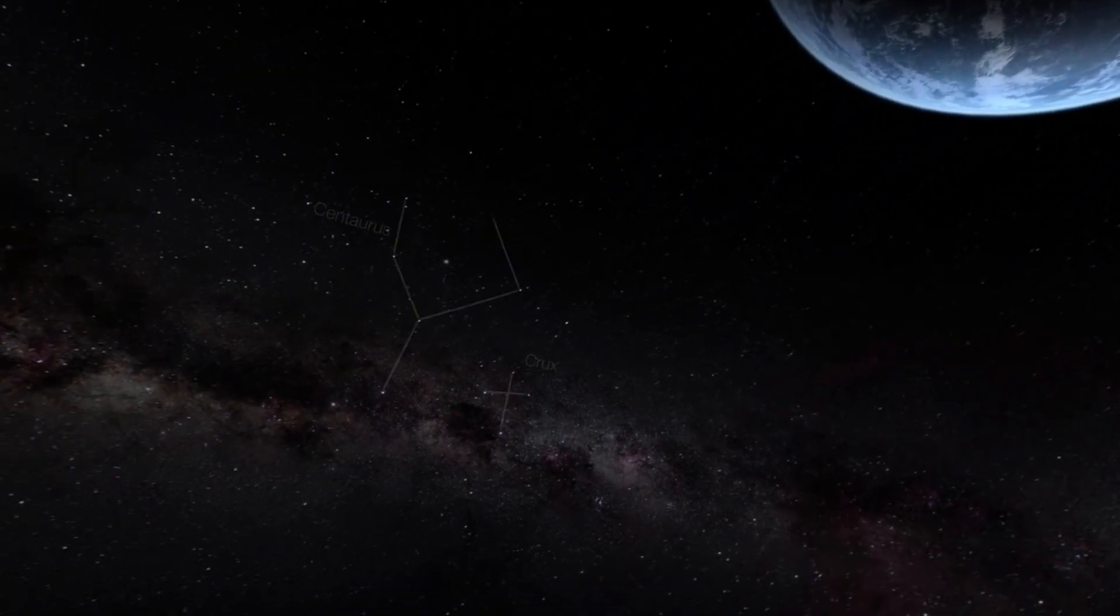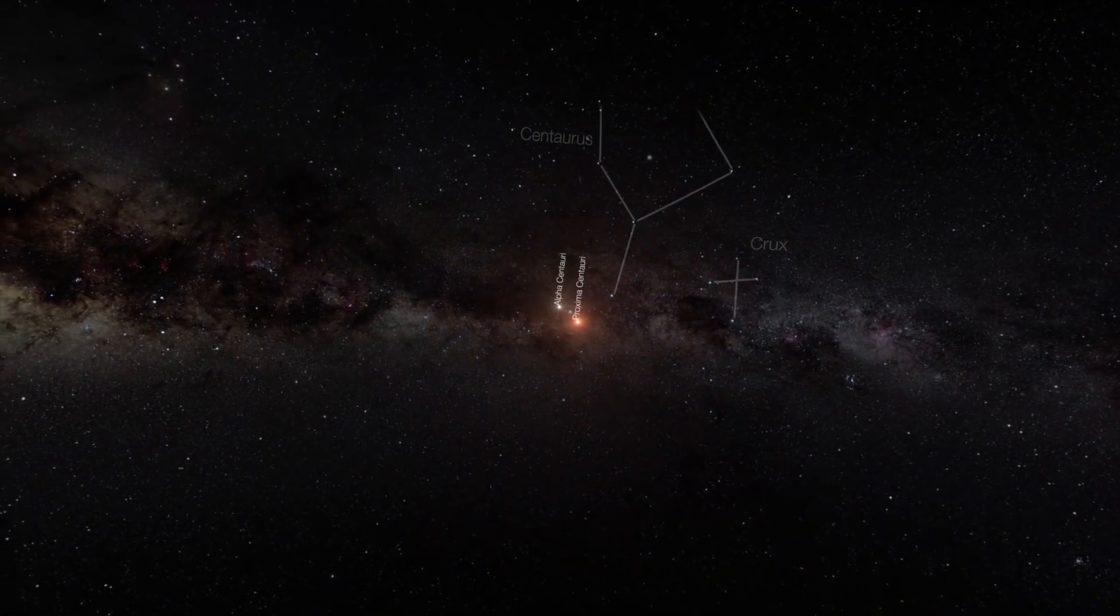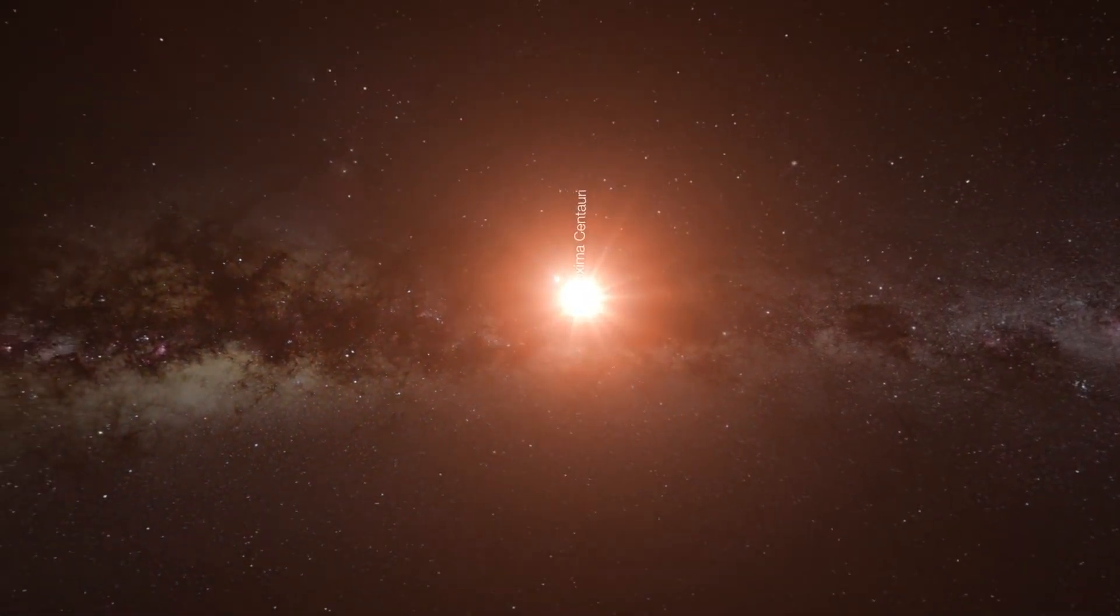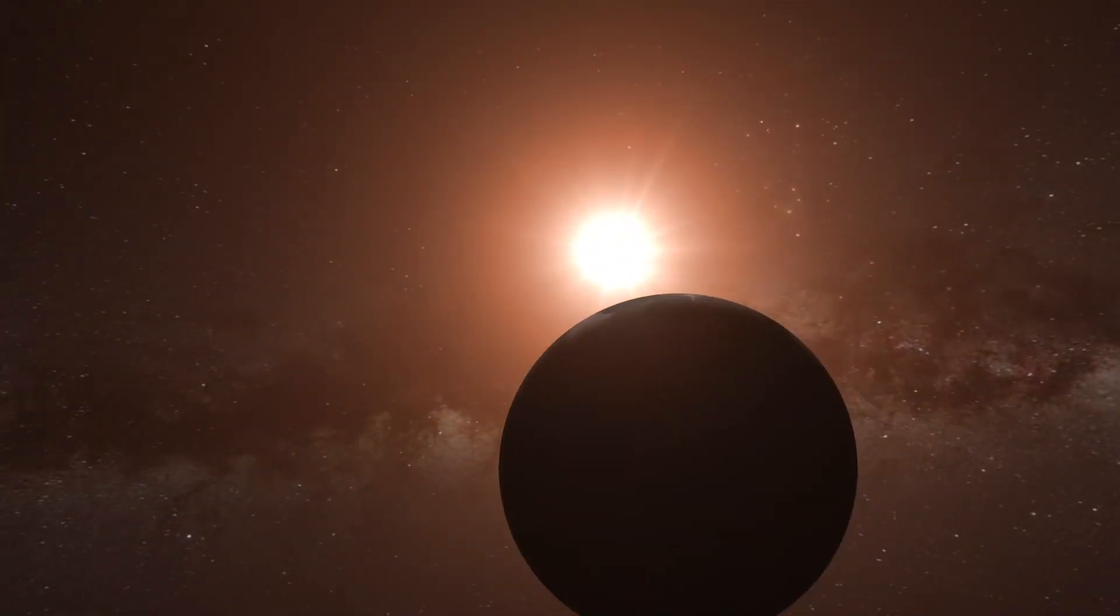40 trillion kilometers away from the solar system, in the constellation of Centaurus, lies a small star system called the Proxima Centauri, where life as we know it might be thriving.